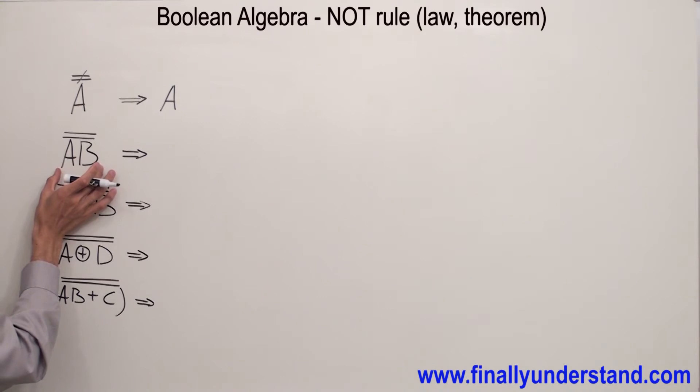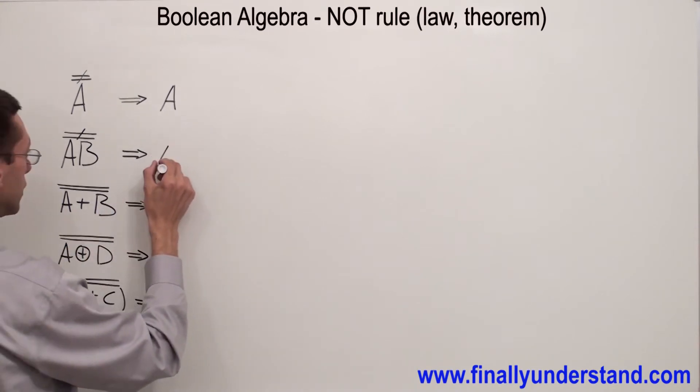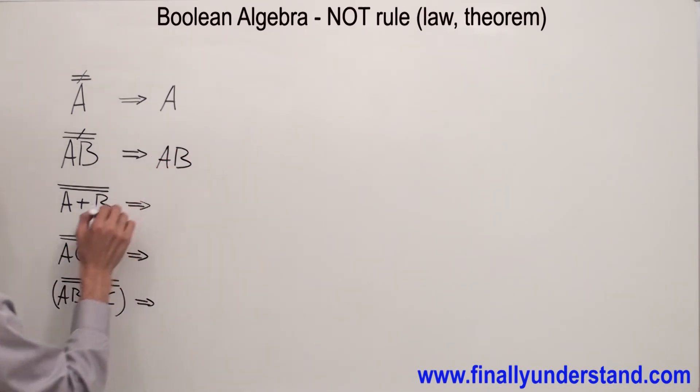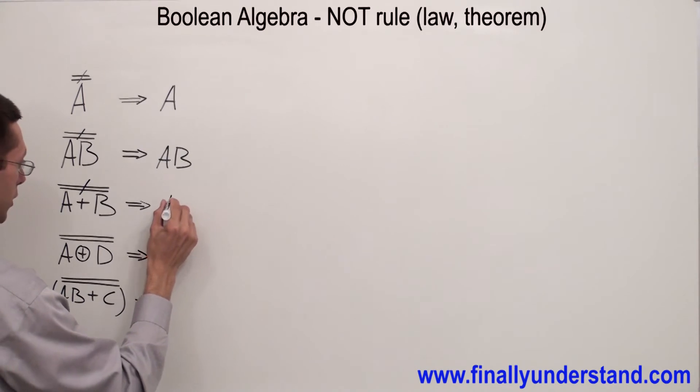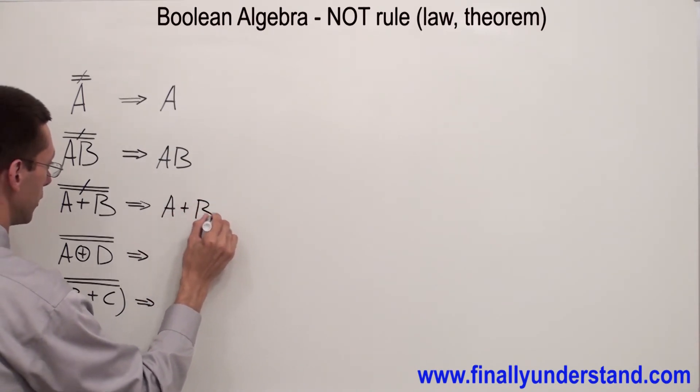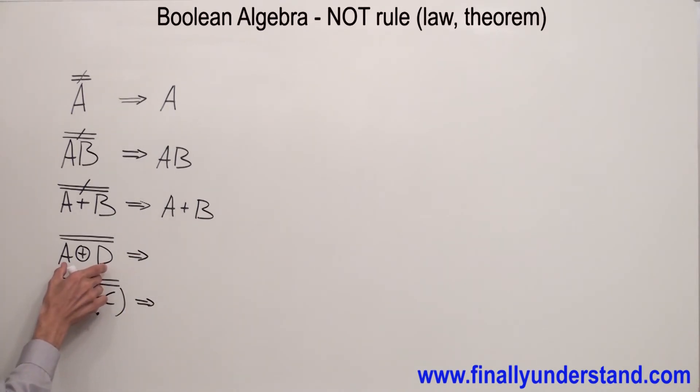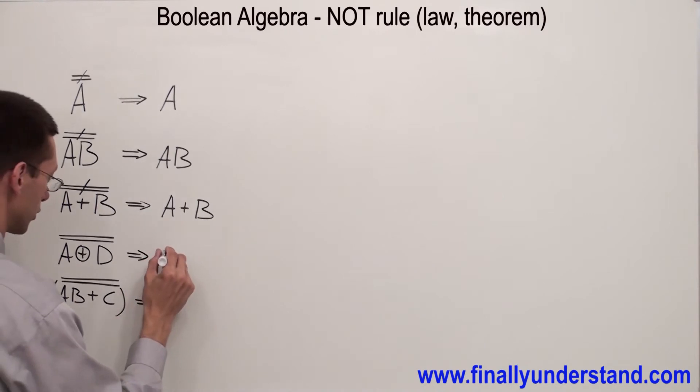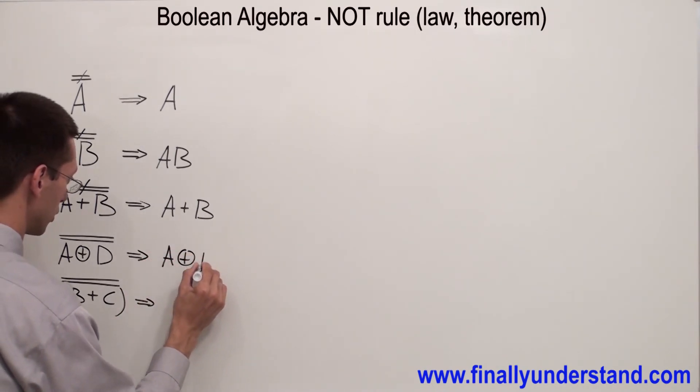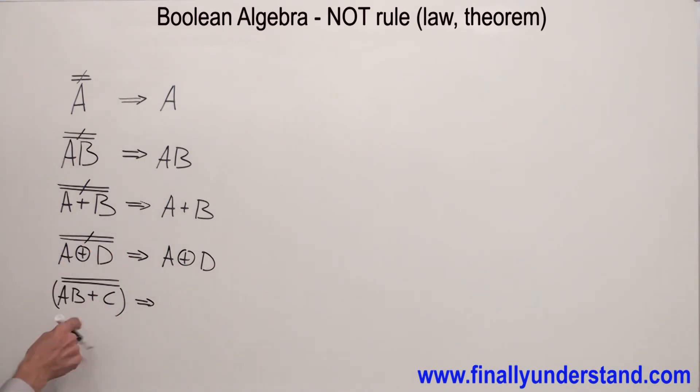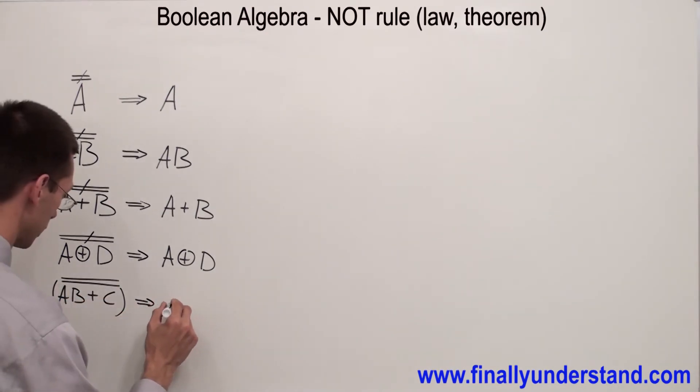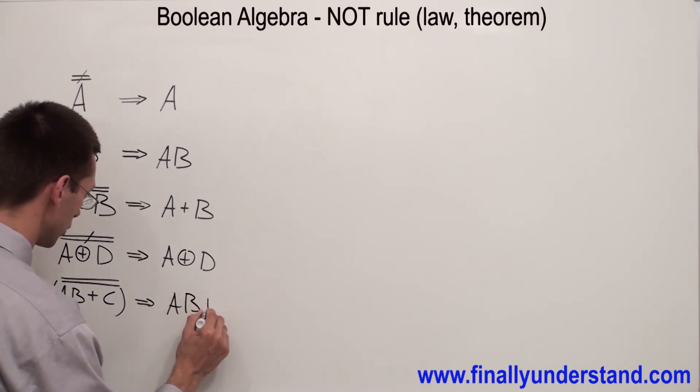The same story happens for any term. Let's say I have AND with two bars above AB - I cancel them out, answer is AB. OR with two bars, they cancel out, so I have A or B. Exclusive OR with two bars, I have just A XOR D. And this expression also has two equal bars above itself, so I have A, B or C.